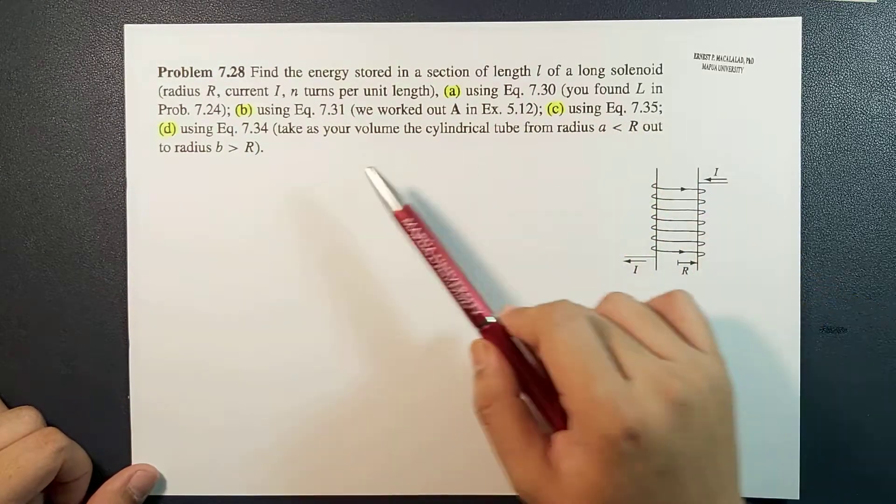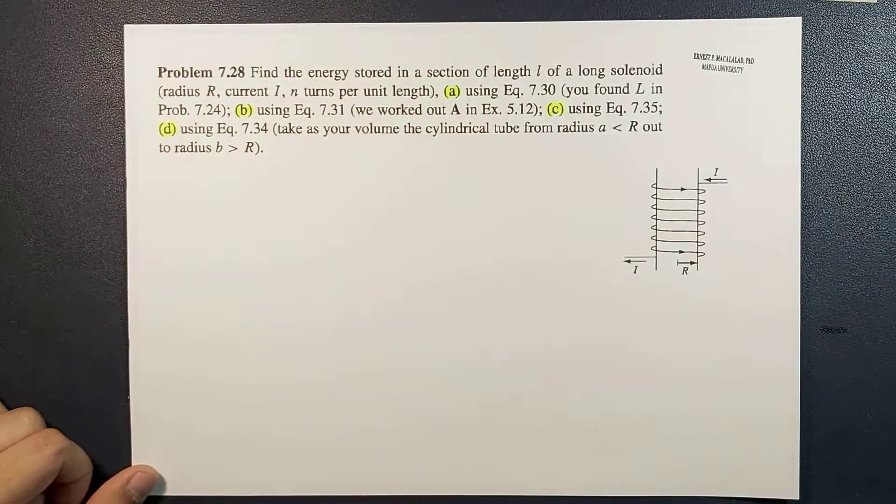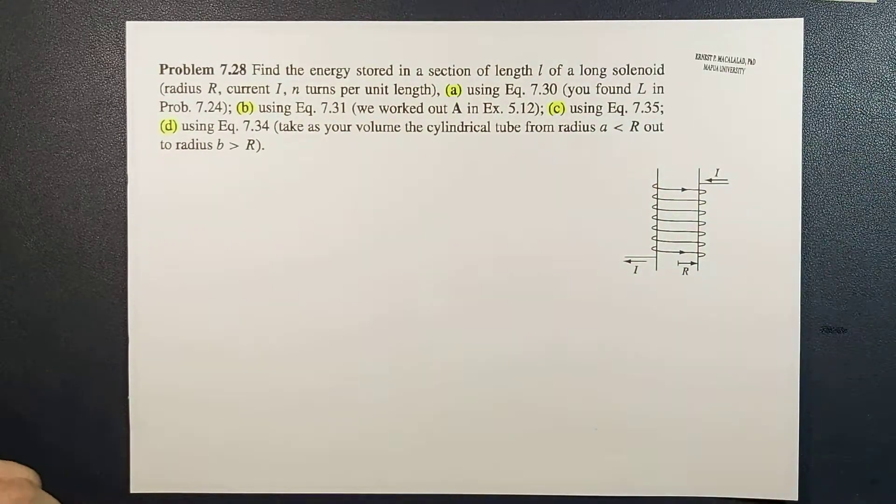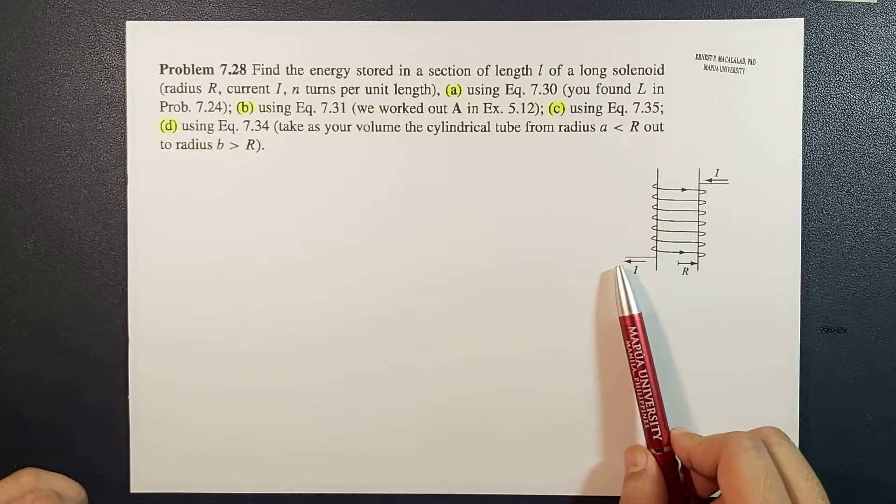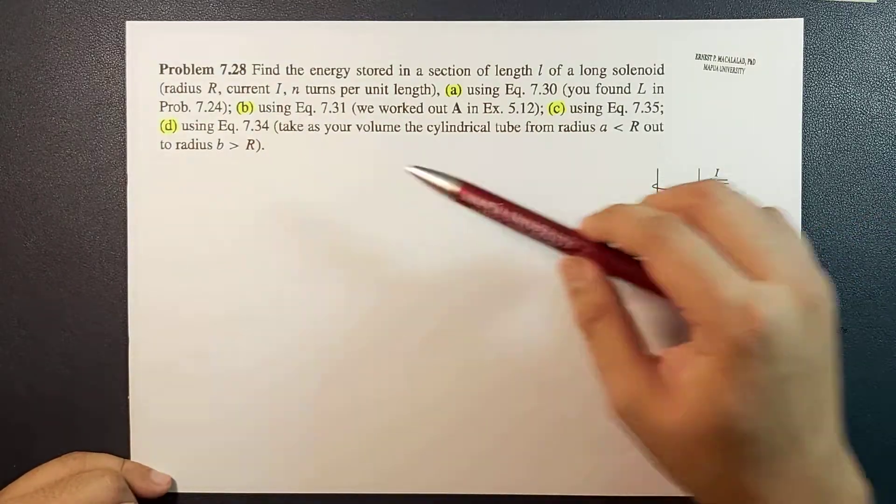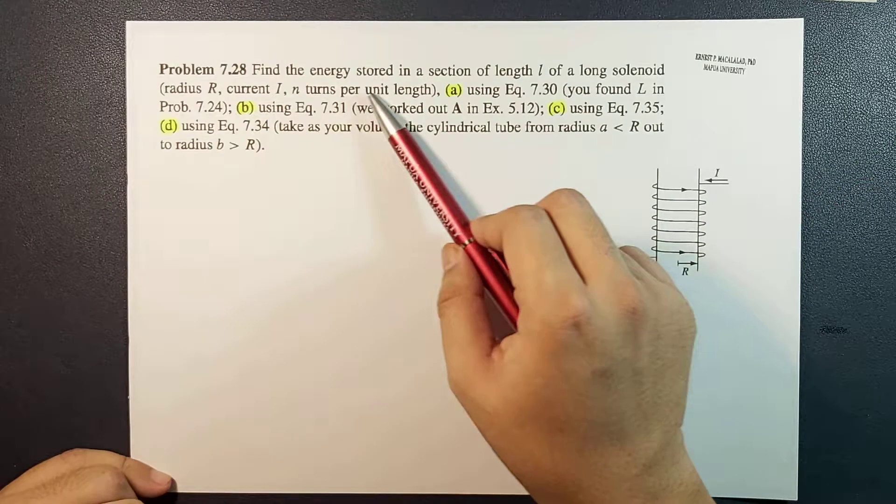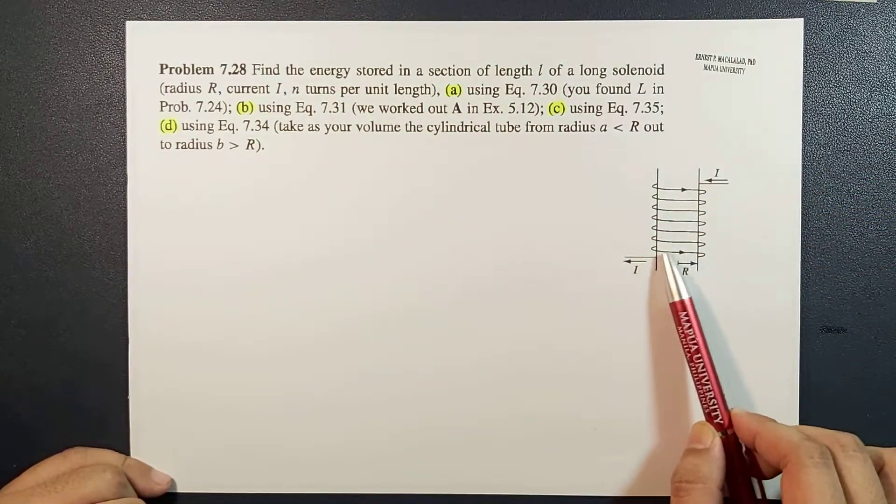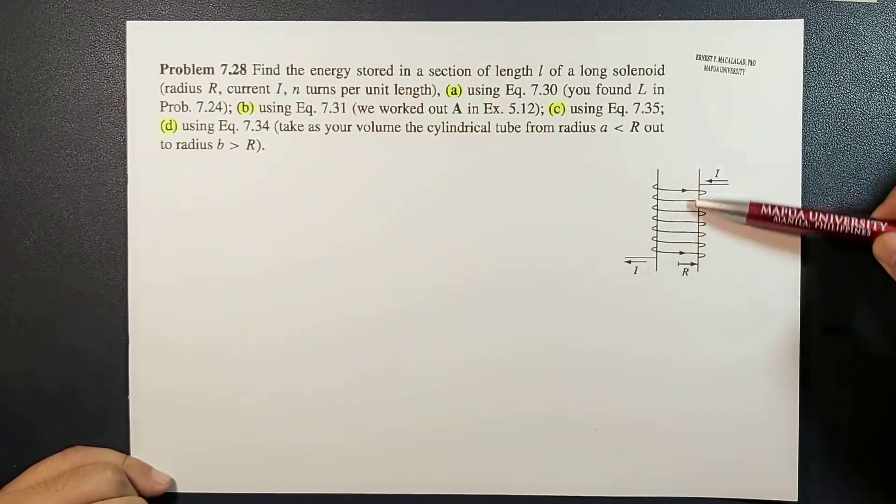We'll use four methods: first using equation 7.30, then using equation 7.31, equation 7.35, and equation 7.34 of your book. Let's recall our solenoid - it's a coil of wire with n turns per unit length, a circular loop that is tightly wound.